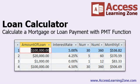Access has lots of great financial functions built into it. One of those is the PMT function that you can use to calculate a loan payment — a monthly loan payment, bi-weekly, quarterly, whatever your loan payment happens to be.